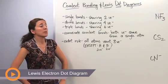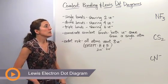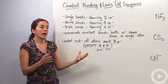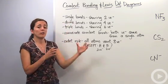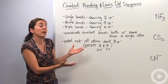Alright, so let's talk about covalent bonding and Lewis dot diagrams. Lewis dot diagrams are illustrations of how the elements in a covalent bond come together to form a structure or a molecule.